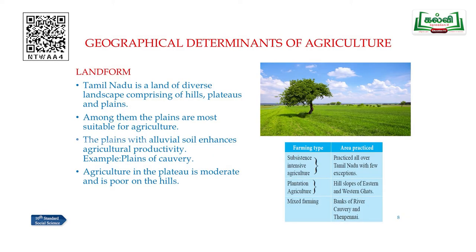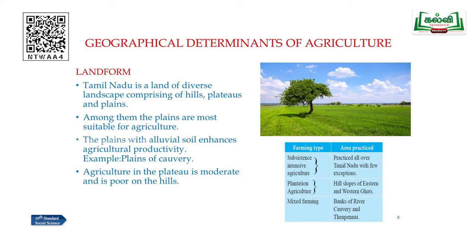Next, we are seeing the geographical determinants of agriculture. The first important point is landform. Tamil Nadu is a land of diverse landscape comprising hills, plateaus and plains. The plains are most suitable for agriculture compared with hills and plateaus. Plains with alluvial soil enhance agricultural productivity — the plains of Kaveri are a great example. Agriculture in the plateau is moderate and poor on the hills. There is also a tabular column related to farming types: subsistence intensive agriculture is practiced all over Tamil Nadu with few exceptions.